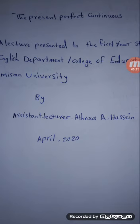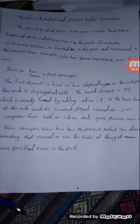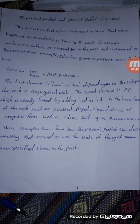Before explaining what is meant by the present perfect continuous tense, I want to clarify what is meant by the perfective aspect. Some claim that the perfective aspect signifies past time with current relevance. And some regard that this description isn't an adequate description of the meaning of the perfective aspect.